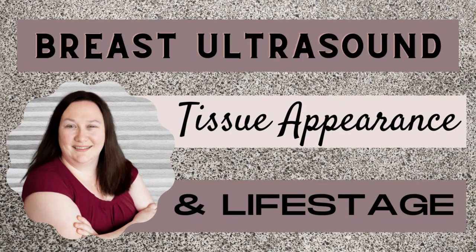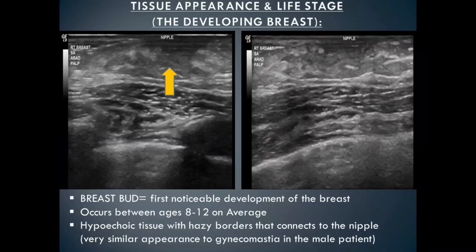What does breast tissue look like during different stages of life? The first stage is the developing breast that occurs between ages 8 and 12 on average. As hormones surge during puberty, a breast bud forms — this is the first noticeable development of breast tissue. The ultrasound appearance is hypoechoic tissue with hazy borders, and all that tissue connects up to the nipple. This appearance is very similar to gynecomastia in the male patient.